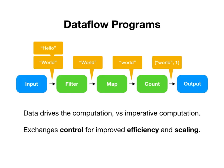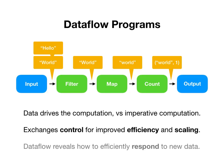It might take your three operators — filter, map, and count — and put them on different computers to improve the throughput of the computation. At the same time, writing your program as dataflow also reveals both to the system and to other users how your computation should respond to new data.